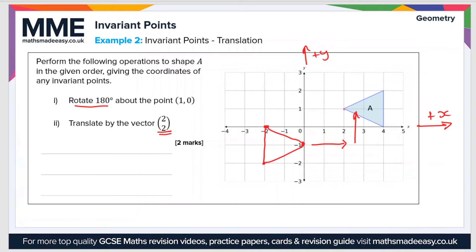So this point here, going 2 to the right, will end up here. This one here in the top left, going 2 to the right and 2 upwards, will end up here. And the final point will end up here. So the resulting shape will look like this.